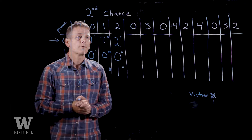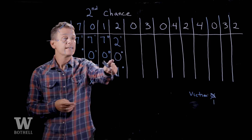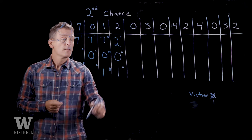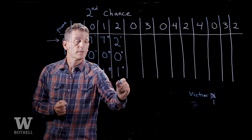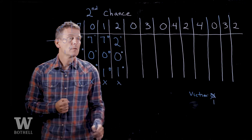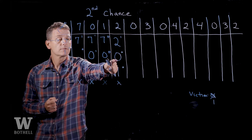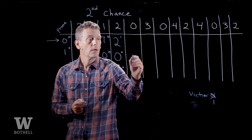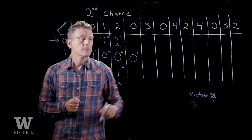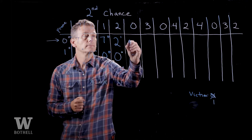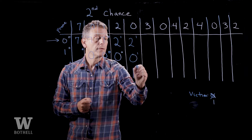Page zero comes along — virtual page zero. Notice it is in memory, so this is not a page fault. Virtual page zero is referenced and it is in physical memory, so we don't have to kick anybody out, but we will set the reference bit to one. No page fault occurs.